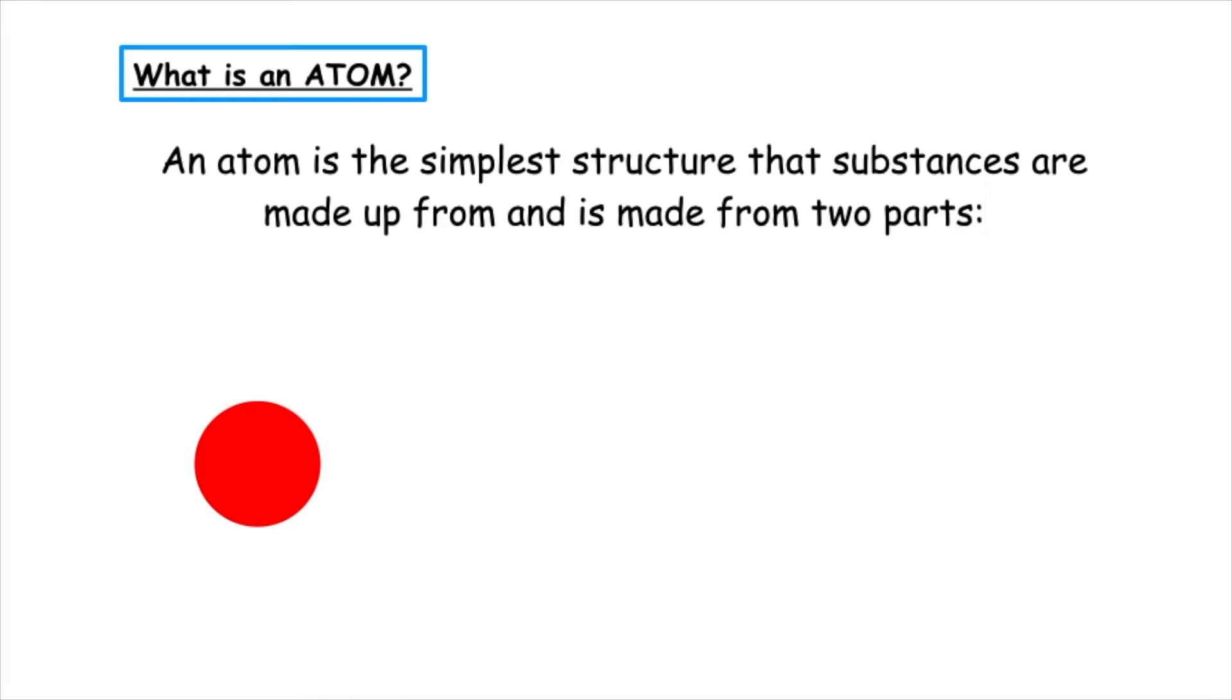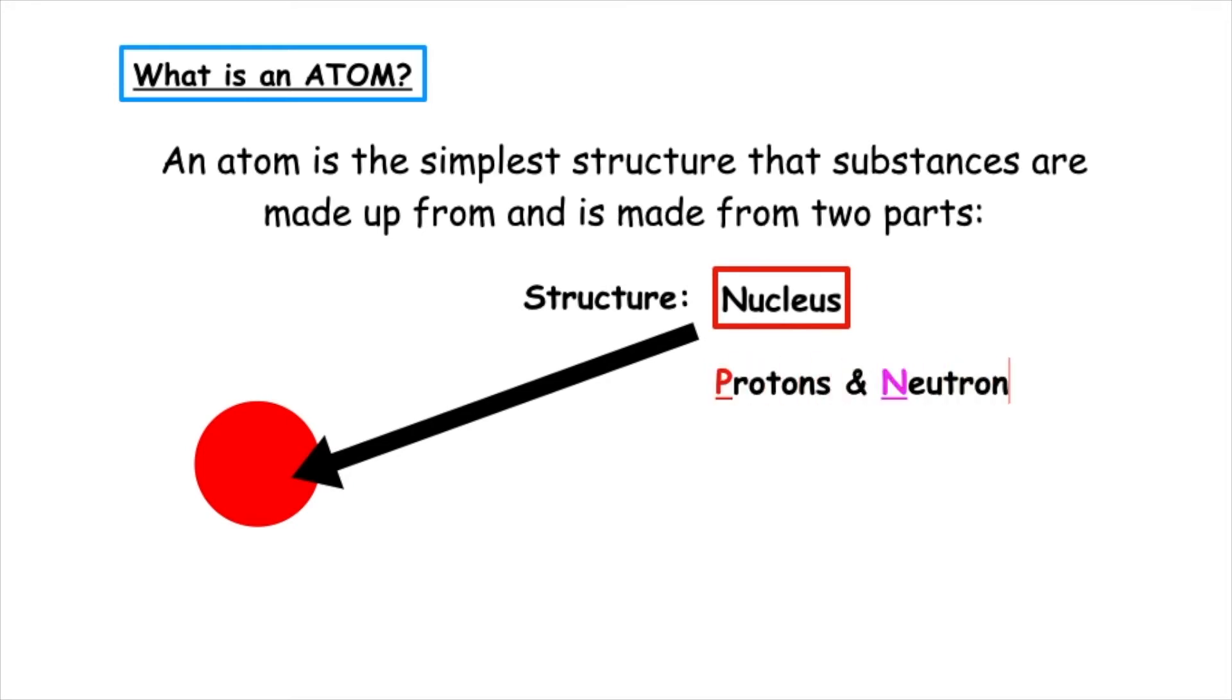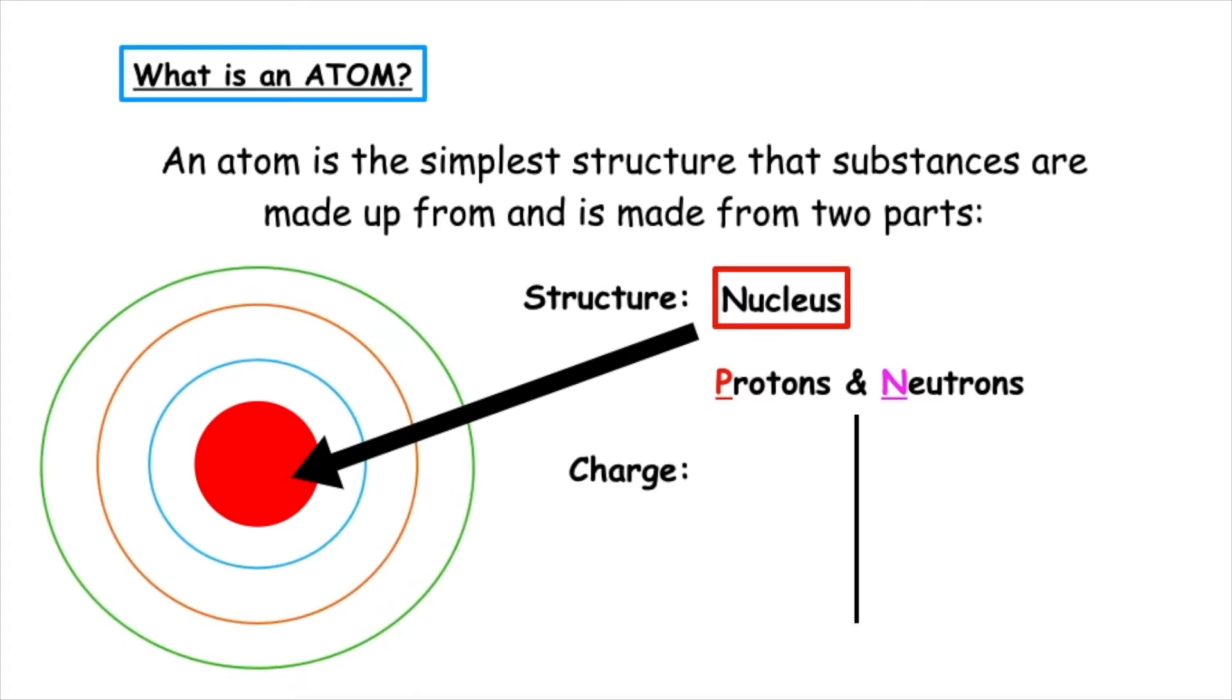The centre of the atom is known as the nucleus and this is where protons and neutrons can be found. Protons are positive, they have a charge of one positive. Neutrons are neutral and they have a charge of zero. Because protons and neutrons are found in the centre of the atom, this is where all the mass is contained. So protons will have a mass of one and neutrons will also have a mass of one.